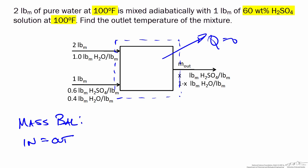We can quickly find the total mass leaving the mixing unit by a total mass balance. The mass leaving is simply the sum of what goes in, which is 2 plus 1, so m_out equals 3 pounds.